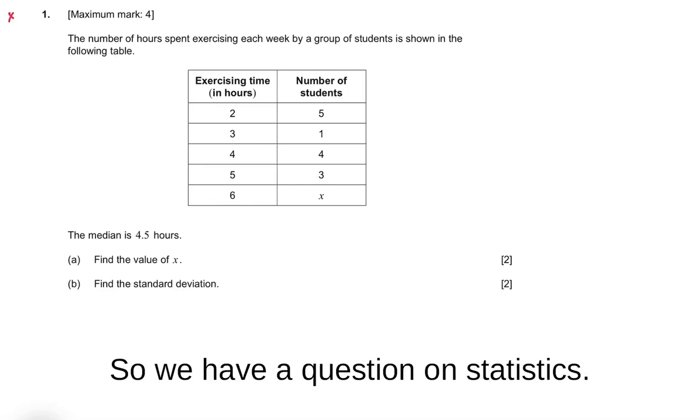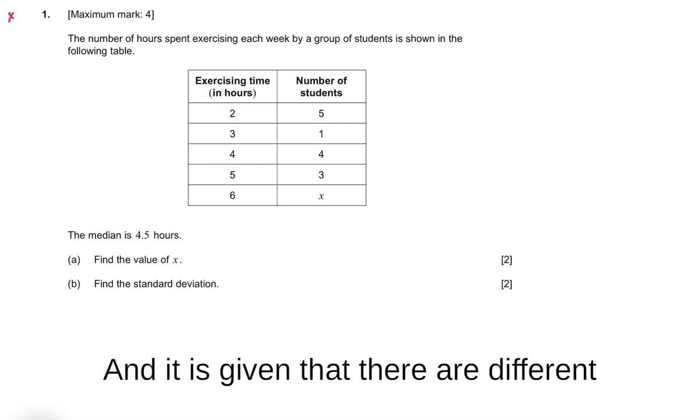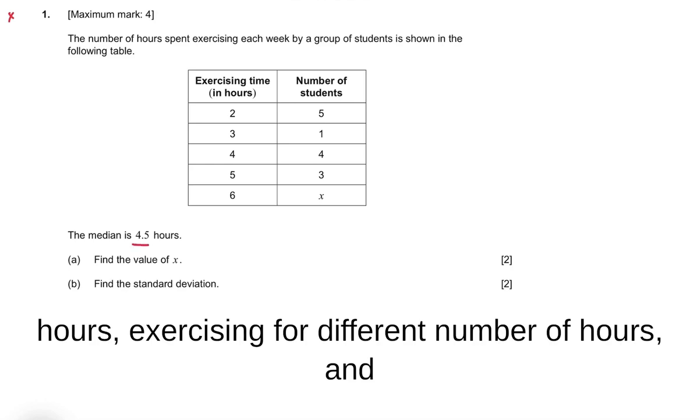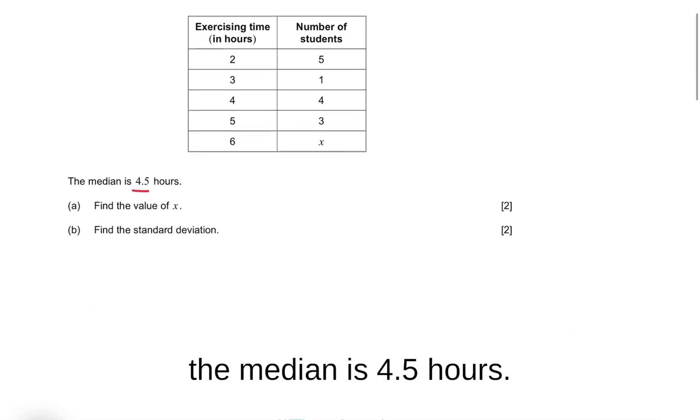Hello friends, so we have a question on statistics and it is given that there are different number of students exercising for different number of hours and the median is 4.5 hours.